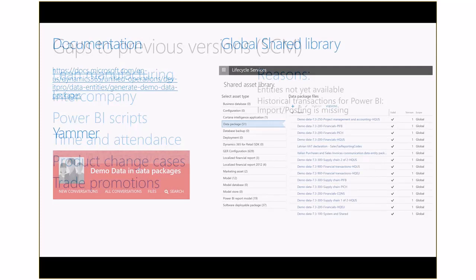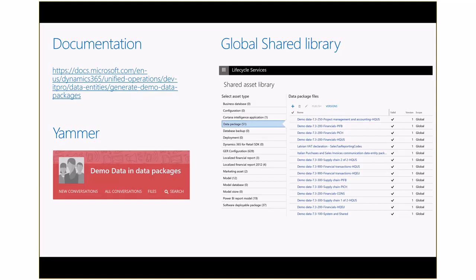For documentation, go to docs.microsoft.com and search for 'demo data packages' — or use the URL on the slide. The Yammer group is called 'Demo Data and Data Packages.' For any problems, email mFaulkner@Microsoft.com. In LCS, go to the global shared library and click on Data Packages — there are 51 items; look for ones starting with 'Demo Data.'